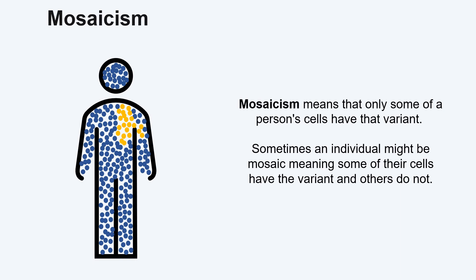For example, if mosaic cells are in a person's muscles, they may experience muscle weakness. Whereas if the individual's mosaic cells are in the kidneys, they may not show severe symptoms.